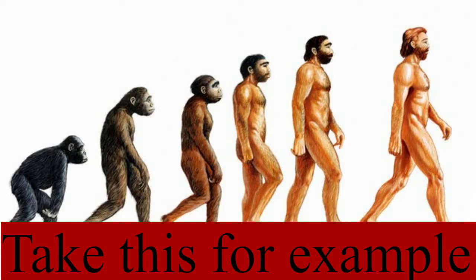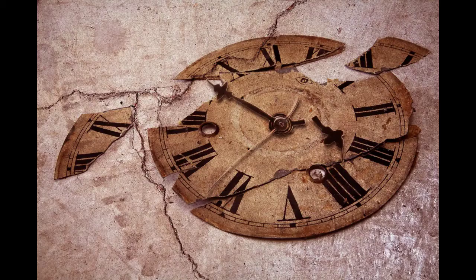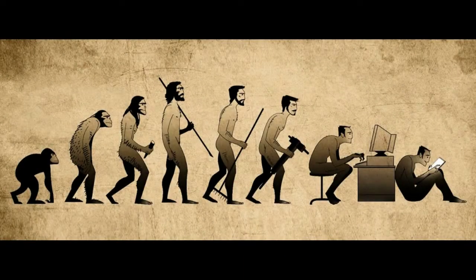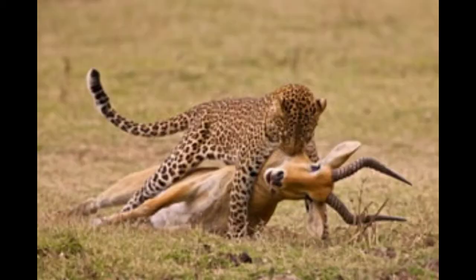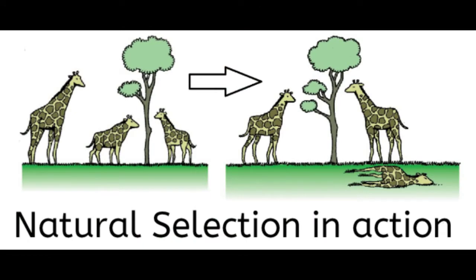Over millions of years, these cells developed to be more advanced — this was evolution according to the endosymbiotic theory. Evolution is the change of characteristics of certain biological populations over many generations. Evolution doesn't happen overnight; it happens over many successive generations over a very long period of time, because of numerous different reasons including environmental pressures.